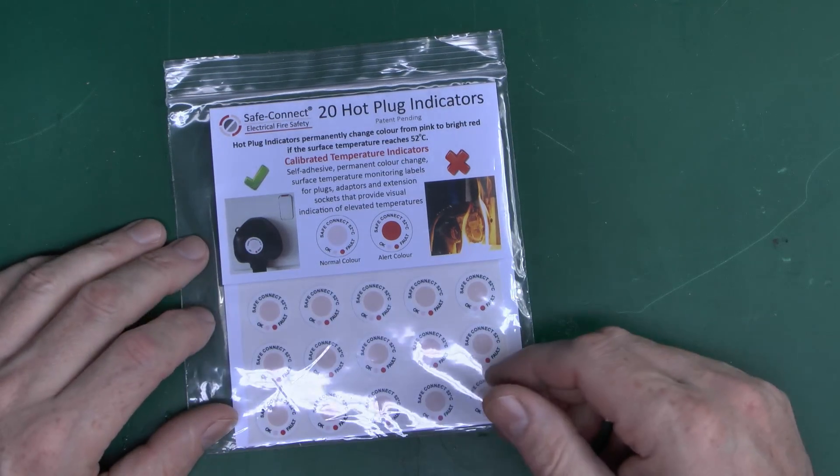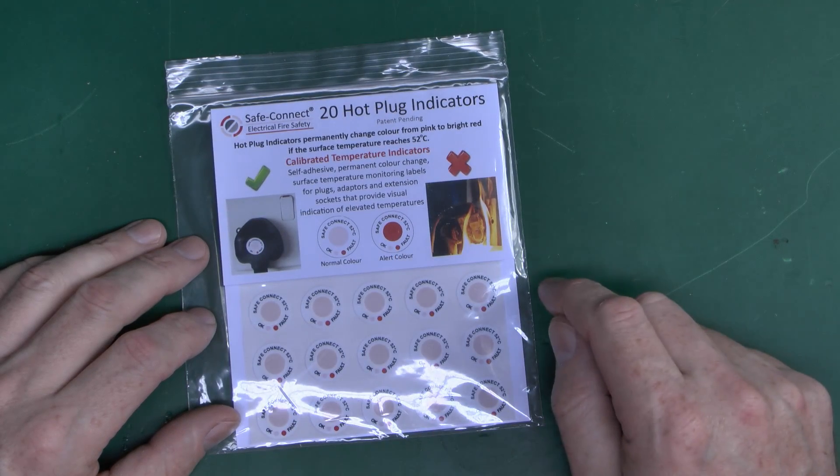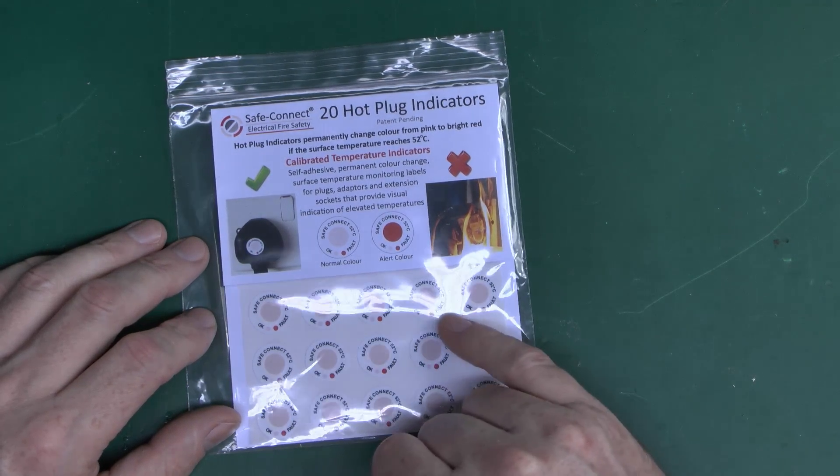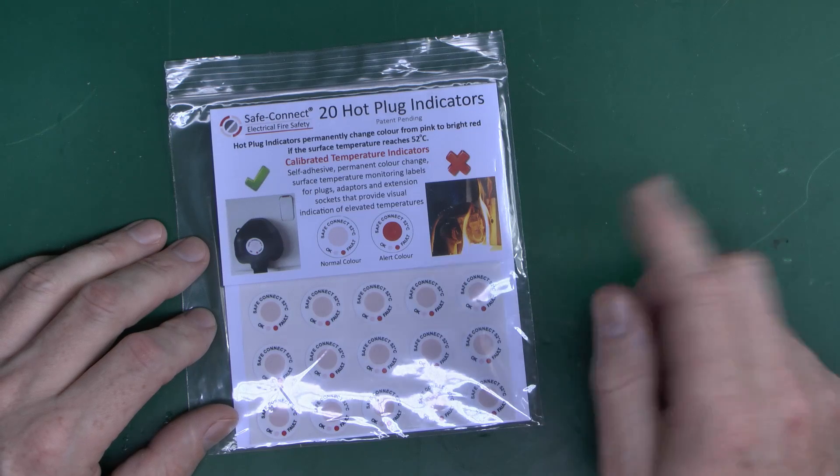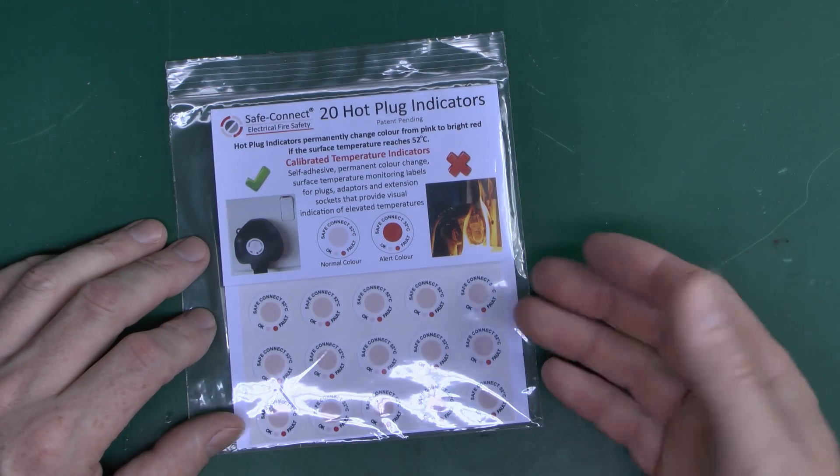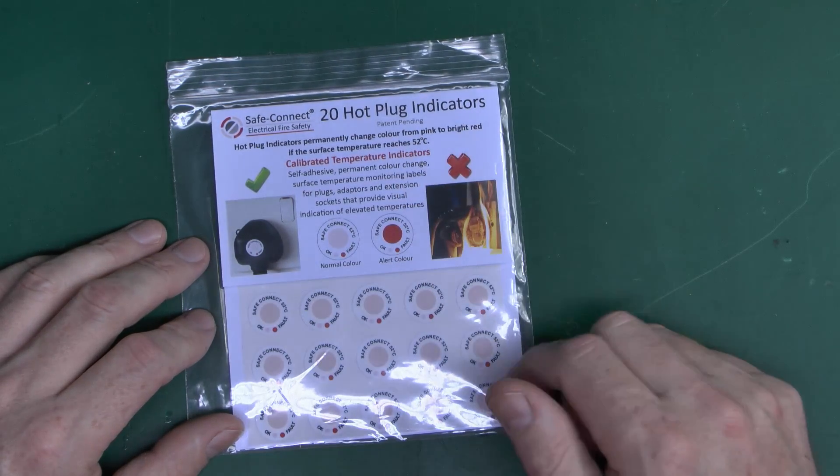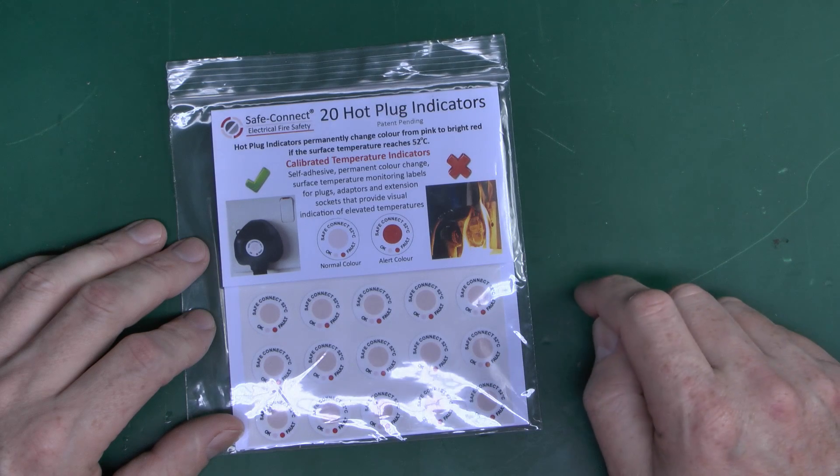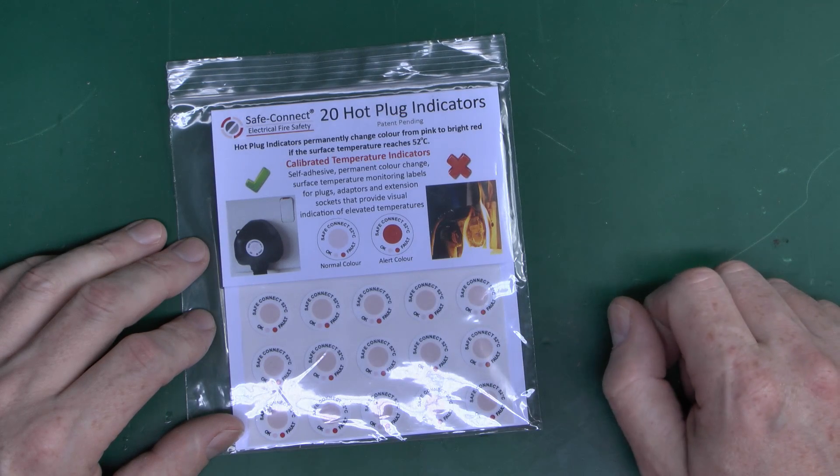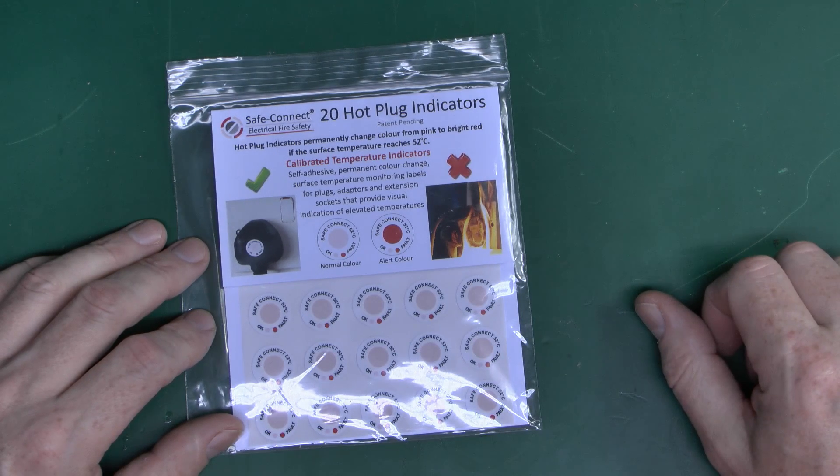Now these are relatively simple things. They're actually thermally activated labels, and in their supplied state the middle is a light pink color. The idea is that when these get hot, in fact over 52 degrees centigrade, then the middle turns red, and most importantly it stays red permanently even if the temperature then decreases afterwards.